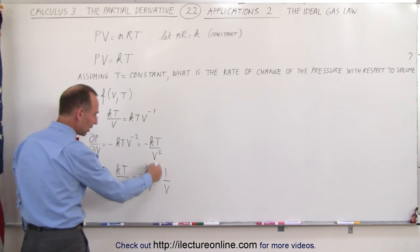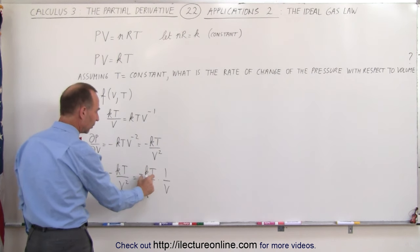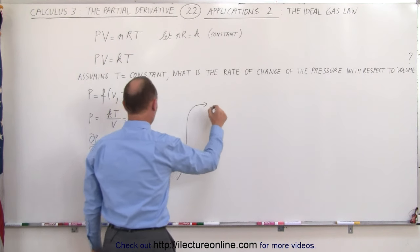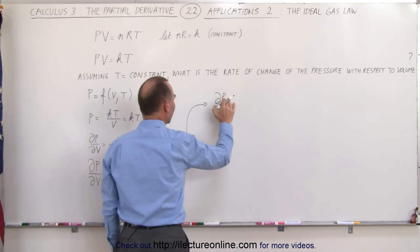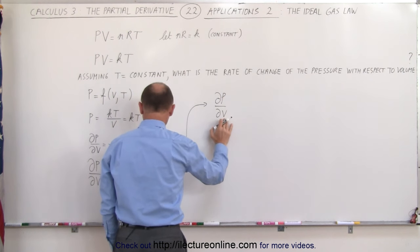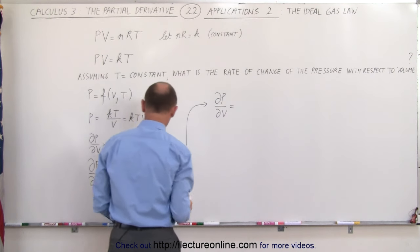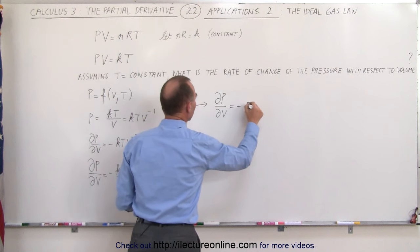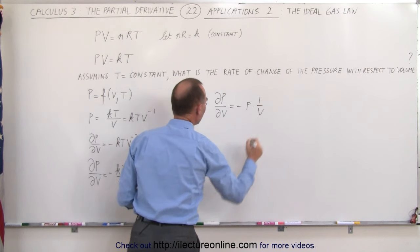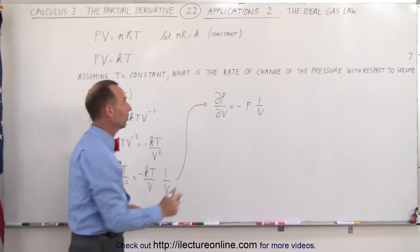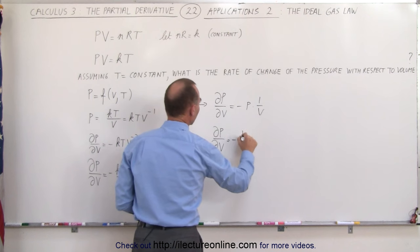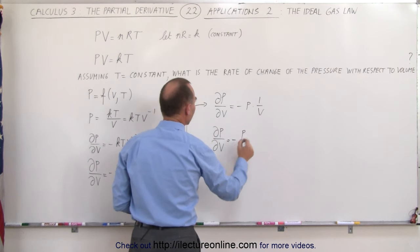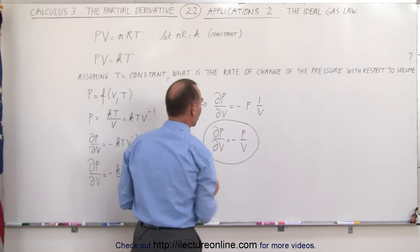So this portion right here can be substituted by the variable P, which means that the partial of P with respect to the volume, that the rate of change of the pressure with respect to the change in the volume, is equal to minus P times 1 over V. Or, better yet, we could say that the change in the pressure with respect to the volume is equal to minus P divided by V. And that's how we can express that.